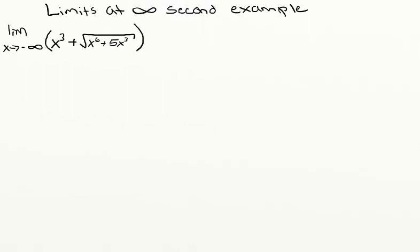Here's our video on limits at infinity, our second example. We're going to consider the limit as x approaches negative infinity of the quantity x cubed plus the square root of x to the 6 plus 5x cubed. The first thing we want to do is think about what would happen if we plug in really large negative numbers to this equation.